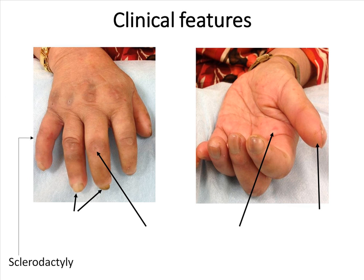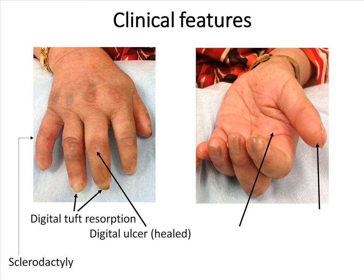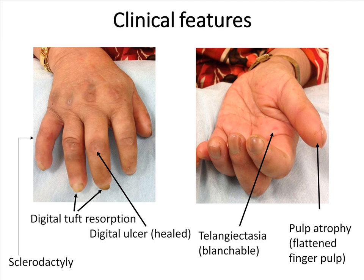Sclerodactyly refers to skin thickening and tightening of the fingers only. Digital tuft resorption is visualized on X-ray as acroosteolysis and is a result of the vascular complications of systemic sclerosis. Also seen here is a large digital ulcer. Multiple telangiectasia are seen on this patient's palm, distinguished from the vasculitic rash of systemic lupus erythematosus as it is blanchable.